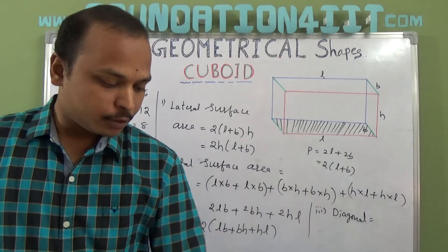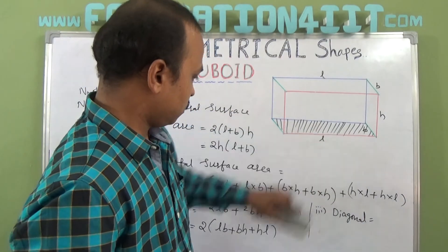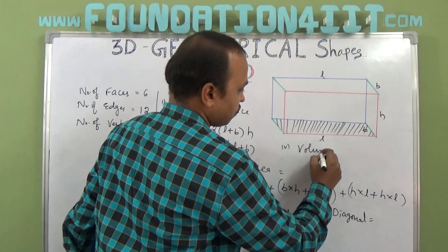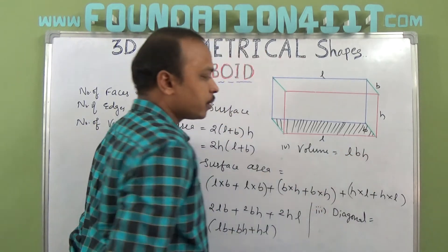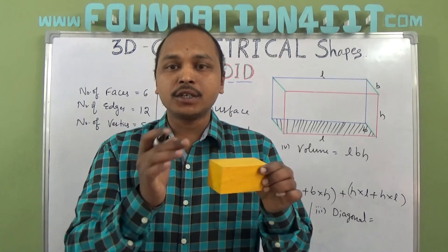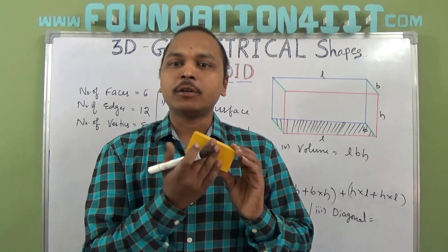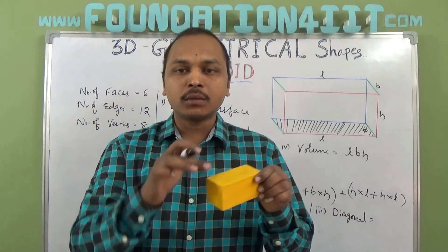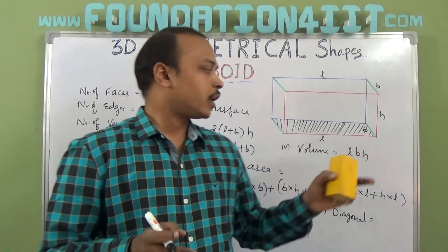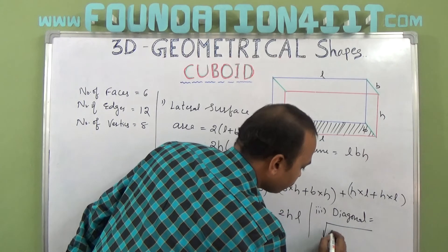Now the volume. Volume is always the area of the base multiplied by the height. The area of the base is l × b (area of a rectangle). So volume equals length × breadth × height, that is l × b × h.